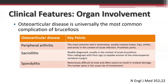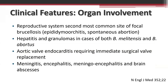Osteoarticular disease presents in three ways: peripheral arthritis, sacroiliitis, or spondylitis. Peripheral arthritis is most common, is non-erosive, and typically involves the knee, hip, ankles, and wrist. It can also involve prosthetic joints. Sacroiliitis is readily diagnosed in the context of acute brucellosis. On plain radiograph, there is the Pons sign, which is a step-like erosion of the anterior superior vertebral margin.